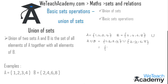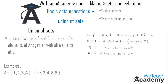So we get A union B as {1, 2, 3, 4, 6, 8}. We can also write A union B in set-builder form as: x such that x belongs to A or x belongs to B.